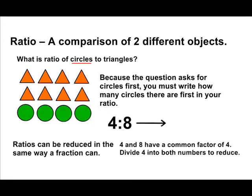Ratios can be reduced in the exact same way that a fraction can. But the way that we interpret the information is different than a fraction, because a fraction is a part compared to a whole. With a ratio, it's the number of one object as compared to the number of another object. Because 4 is the greatest common factor of 4 and 8, we would divide 4 into both numbers, giving us a reduced ratio of 1 to 2.